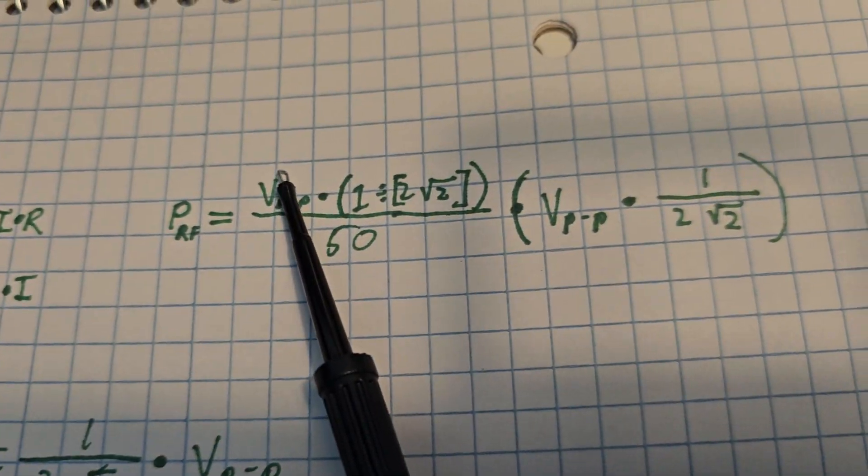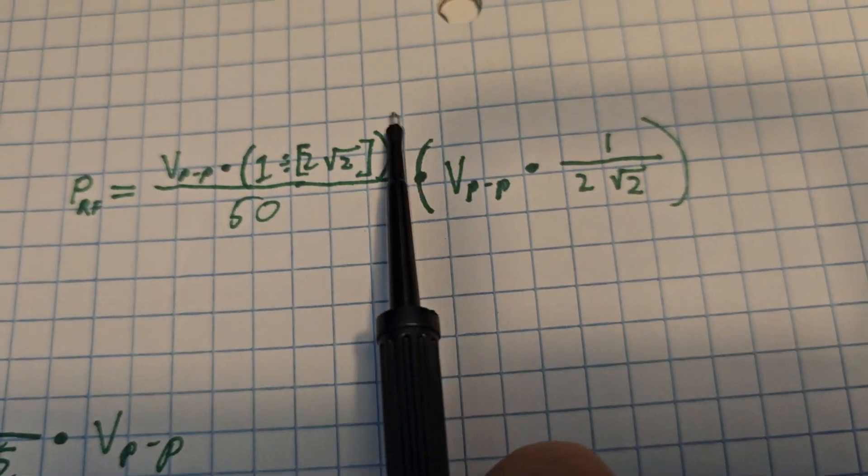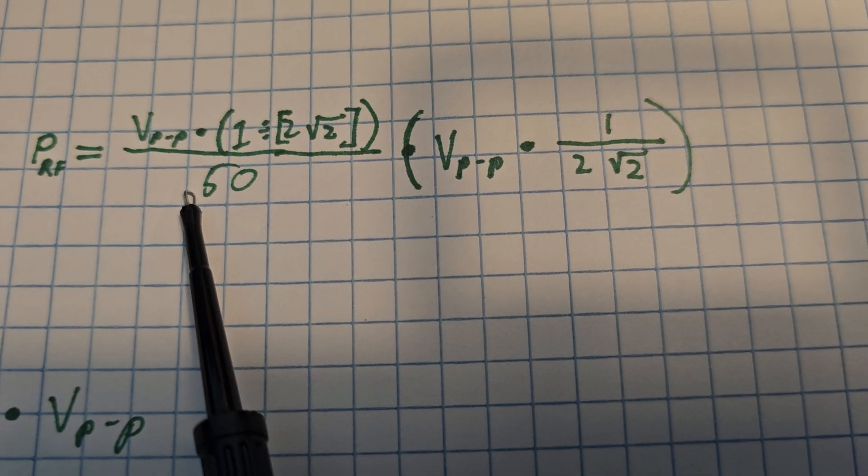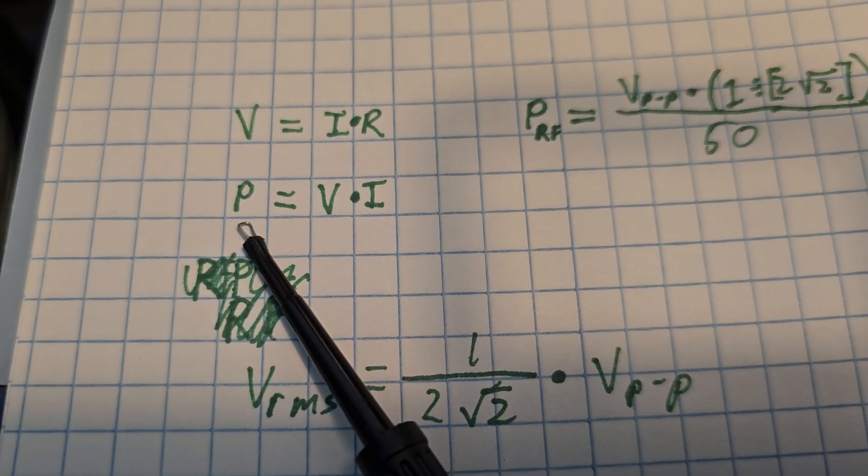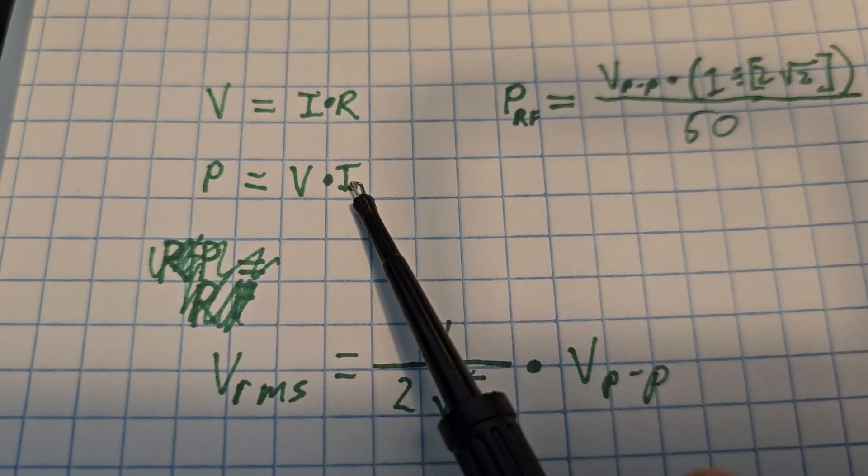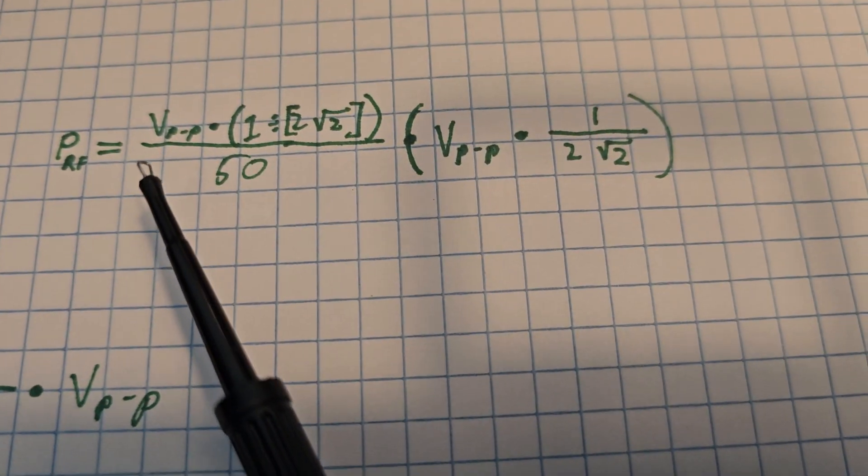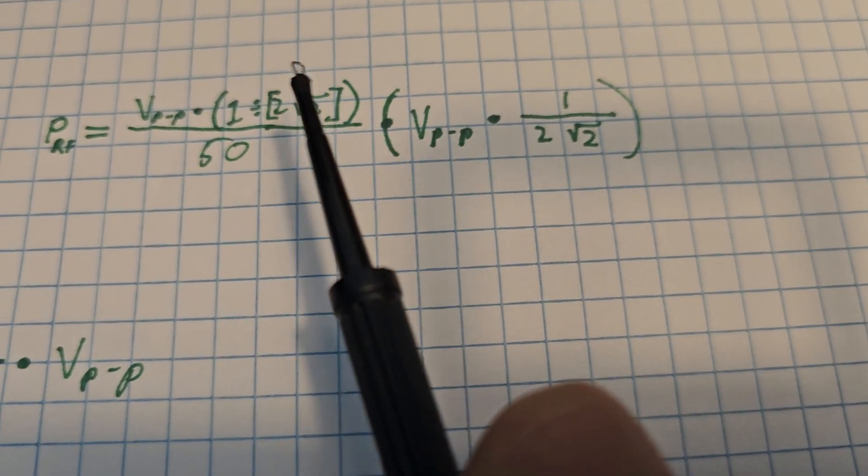So this is with equivalence to I current. So our power is P equals V times I.